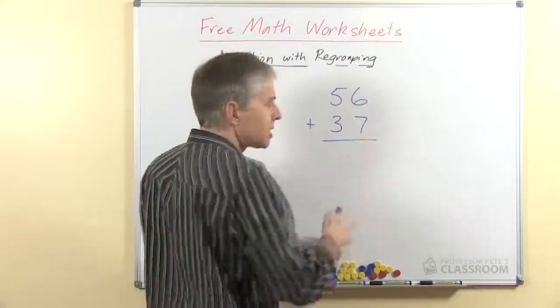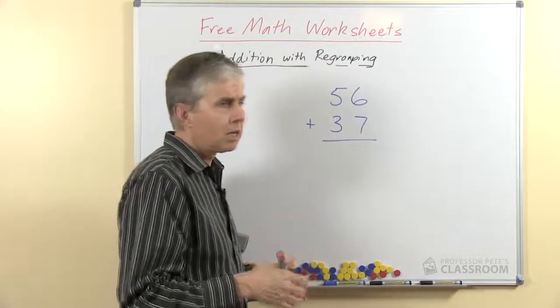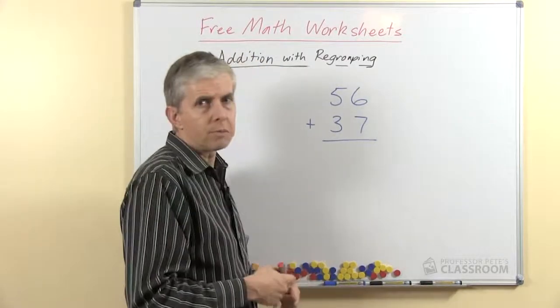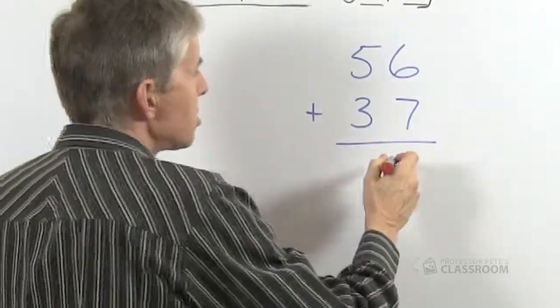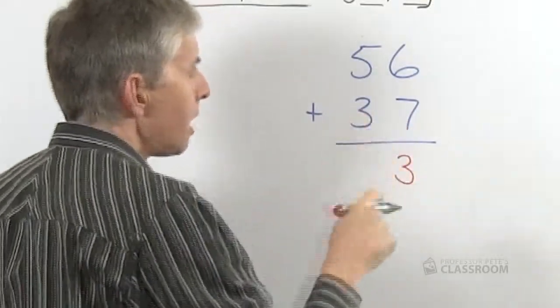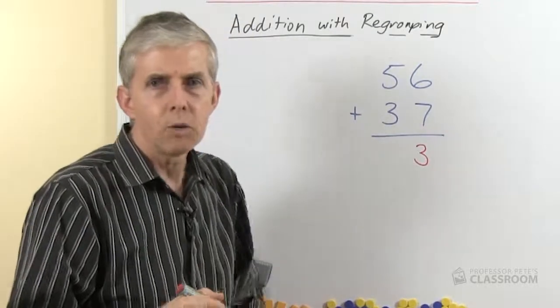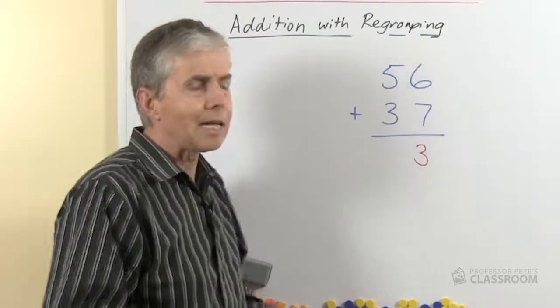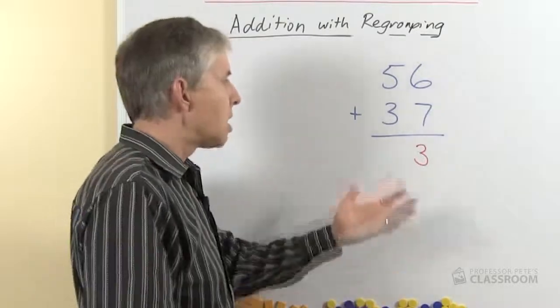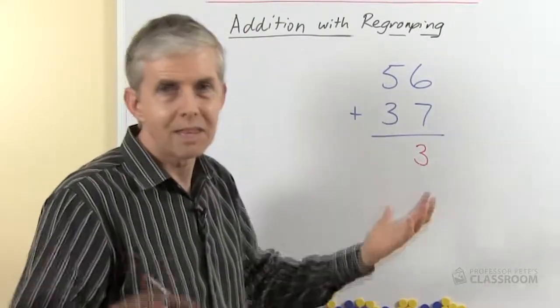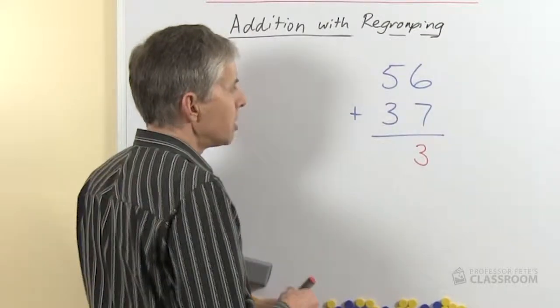We're going to start with the ones of course because that's the way we do this operation because of the need for regrouping sometimes. So 6 plus 7 is 13, we're going to write the 3 and then ask a question with our students such as are there enough ones to make a 10, do we have more than 9, that sort of question. There's a number of ways you could put it.